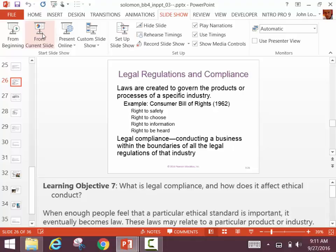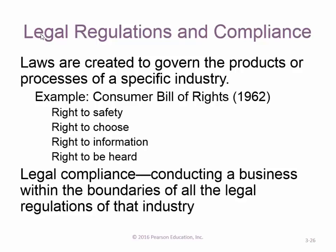We're going to finish up our Chapter 3 discussion and then get into Chapter 4. We were talking about ethical issues dealing with business, the different scandals, and what happens when the government ends up getting involved if companies don't police themselves properly. Throughout the years there have been different consumer protection laws and a customer bill of rights.